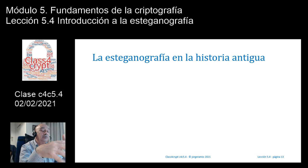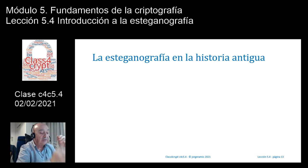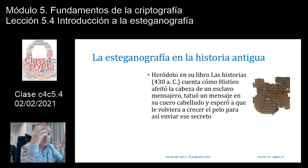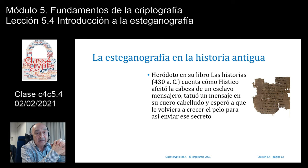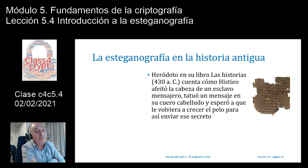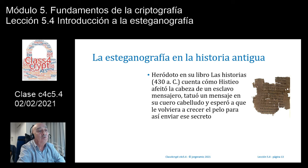La esteganografía tiene un desarrollo histórico tan antiguo como la criptografía. En el año 430 a.C., Heródoto cuenta en Las historias cómo Histieo afeitó la cabeza de un esclavo mensajero, le tatuó un mensaje en el cuero cabelludo, esperó a que le creciera el pelo y lo envió al destinatario. Este tenía la orden de rapar la cabeza del esclavo para leer el mensaje. Un ejemplo muy interesante del año 430 a.C.